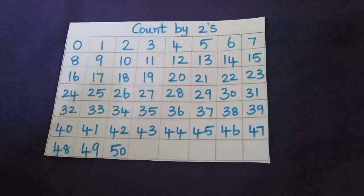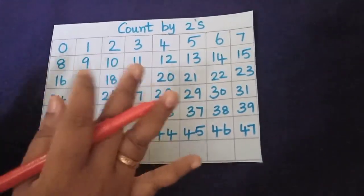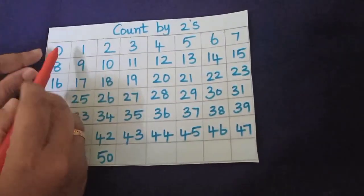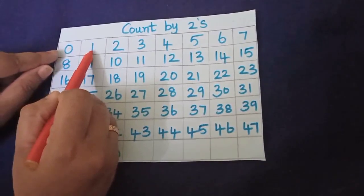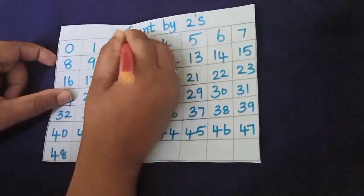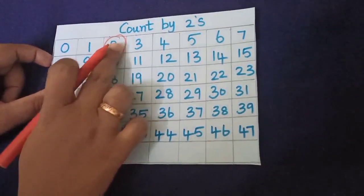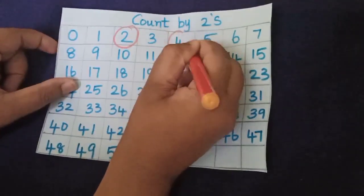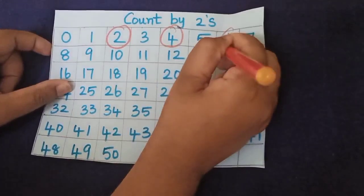We saw that skip and jumping activity, right? Now we are going to do it on paper. See, first we are at 0 — what we have to do? We have to skip the first number and jump on 2. Let's see what numbers come in count by 2. After 2, what we have to do? We have to skip 3 and jump on 4. And then? Skip 5, jump on 6.